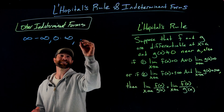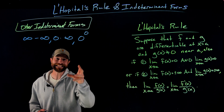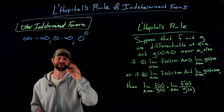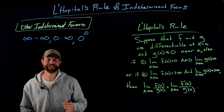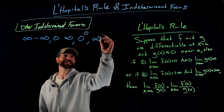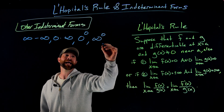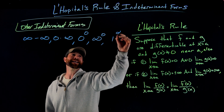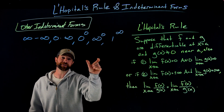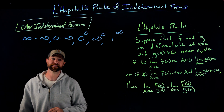We also have zero raised to the zero power. In this example, we're going to use logarithms — like we did with logarithmic differentiation — to attack this. Finally, the other important indeterminate forms are infinity raised to the zero power and one raised to infinity. These last two are particularly important for proofs you'll see in later calculus classes.